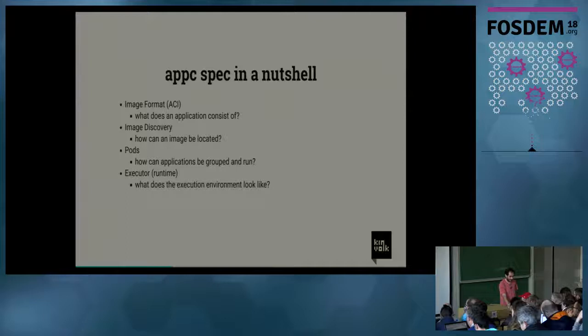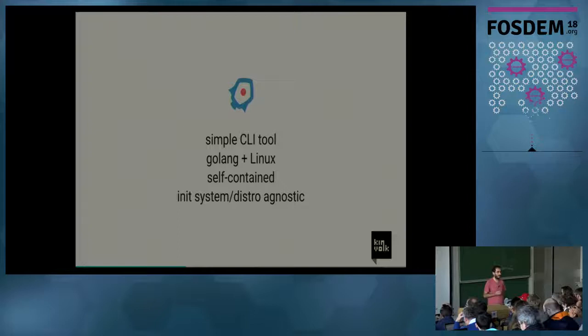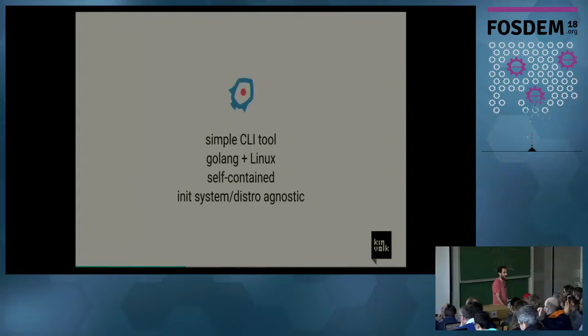The fourth concept is the executor — what the application should expect when it's running, the environment it runs in. In the end, Rocket is just a CLI tool. It doesn't have any daemons. It's written in Go and it's Linux-specific — we don't try to support FreeBSD or macOS. It's pretty self-contained, with simple dependencies to the GLC and typical dynamic libraries on your Linux system, and it's system and distro agnostic, although we optimize it to run under systemd.